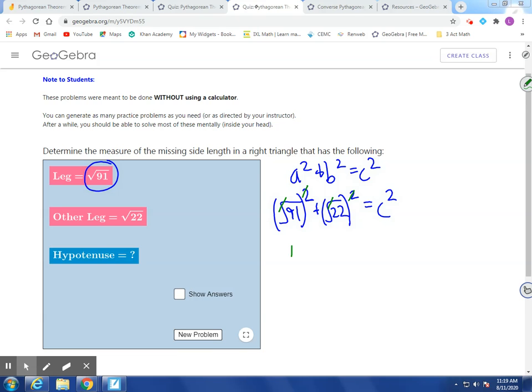And we're left with 91 plus 22 is equal to c squared. So now we add these together. We'll have 113 is equal to c squared. Take the square root of both sides, and if we didn't have a calculator, we could say that c is equal to the square root of 113. We can box that and walk away.